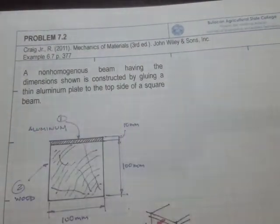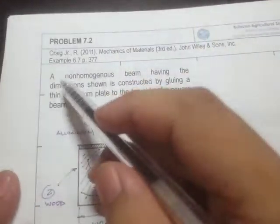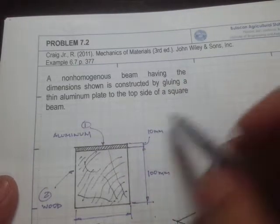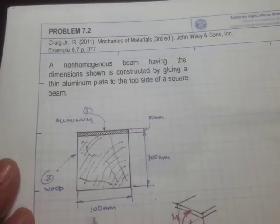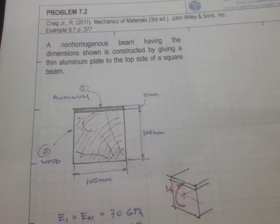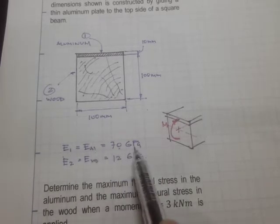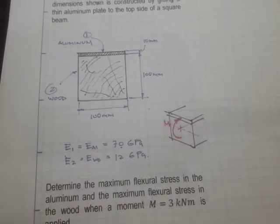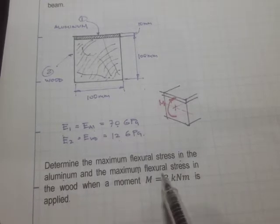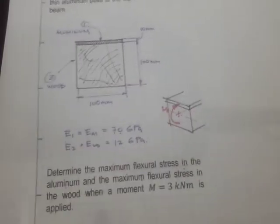The problem: a non-homogeneous beam is constructed by gluing a thin aluminum plate to the top of a square wood beam. The wood section is 100 mm × 100 mm and the aluminum plate thickness is 10 mm. The modulus of elasticity of aluminum is 70 GPa and for wood is 12 GPa. Determine the maximum flexural stress in the aluminum and in the wood when a moment M = 3 kN·m is applied.